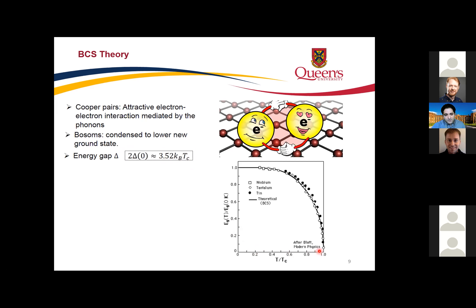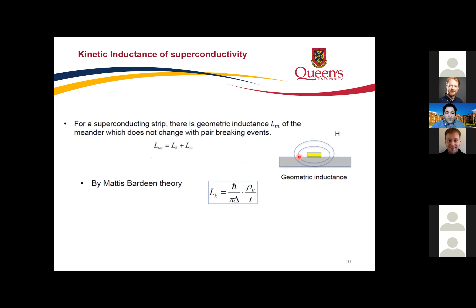An important operational point: BCS theory applies when the temperature is around 20% of the critical temperature. That is why for aluminum MKIDs — with Tc around 1.2 K — we prefer to operate at about 10 times lower, around 100 mK. The thin film has two relevant parameters: its geometric/magnetic properties and its kinetic inductance. Kinetic inductance can be calculated from an equation where T is the thin film thickness — decreasing thickness gives higher kinetic inductance and better MKID response.